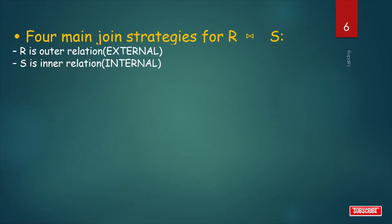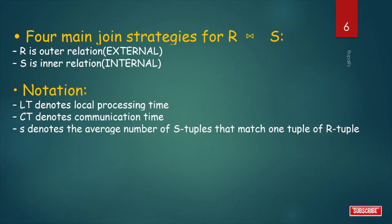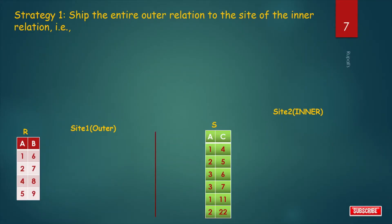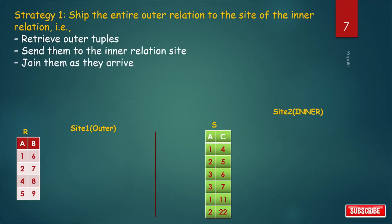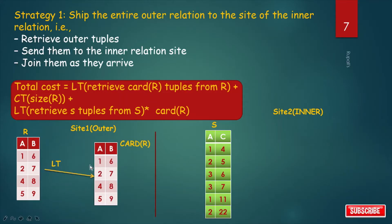There are four main join strategies for R natural join S, where R is the outer relation and S is the inner relation. The notations are: LT denotes local processing time, CT denotes communication time, and S denotes the average number of S tuples that match one tuple of R. Strategy one: ship the entire outer relation to the site of the inner relation — retrieve outer tuples, send them to the inner relation site, and join them as they arrive. The cost includes LT to retrieve card(R) tuples from R.